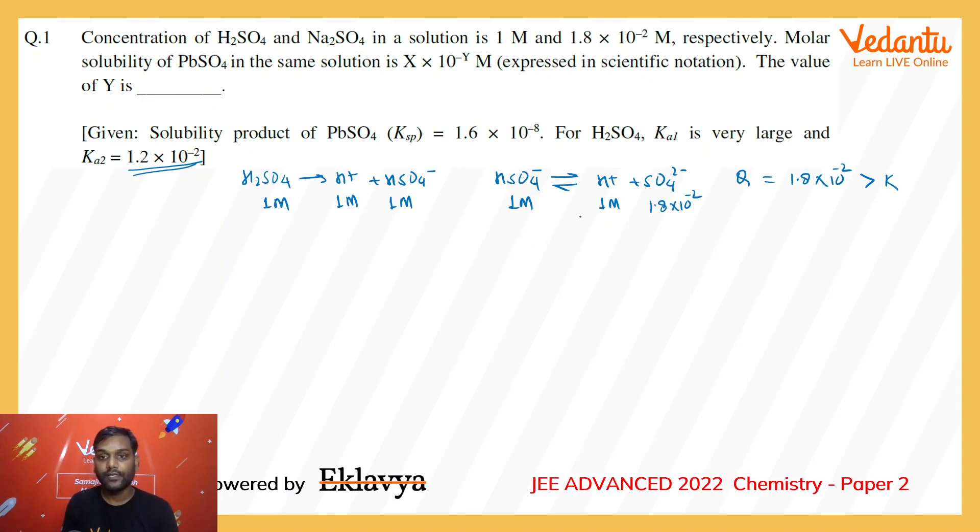So it becomes 1 + x at equilibrium, it becomes 1 - x at equilibrium, it becomes 1.8 × 10^-2 - x at equilibrium.